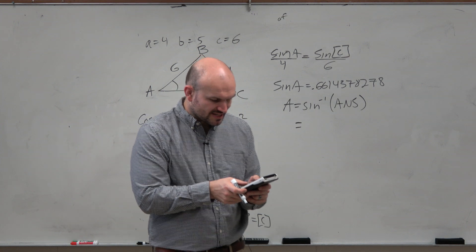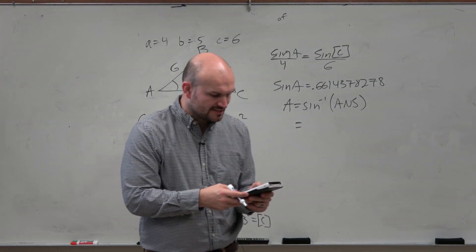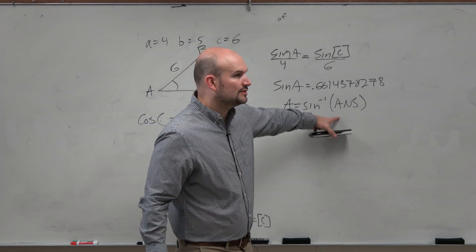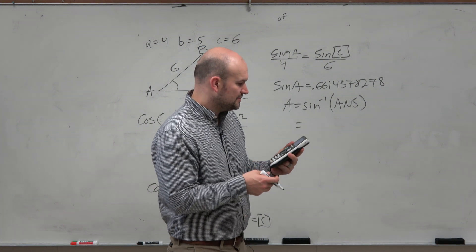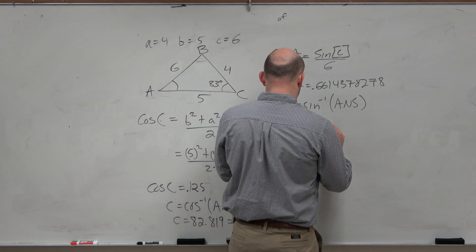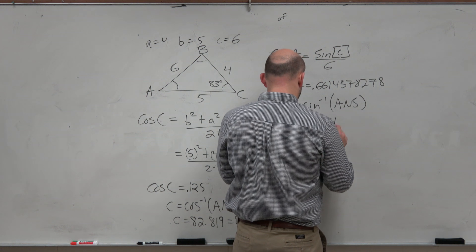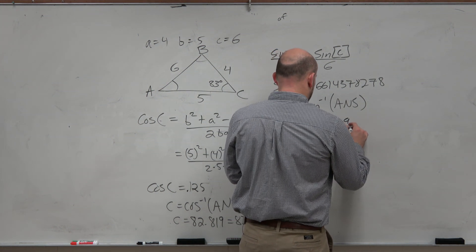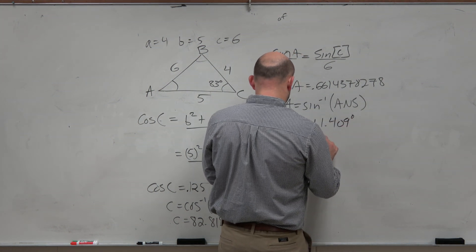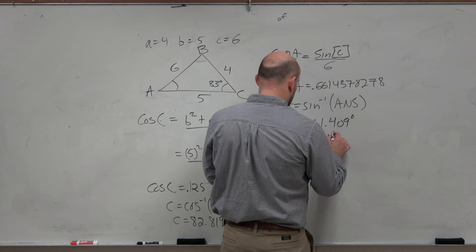So A equals sine inverse of that answer. So what I'm going to do is, I'm just going to take second inverse and then second answer. So that's what I want to be looking for on my calculator. And when I do that, I get 41.409 degrees, which is equal to 41 degrees rounded.